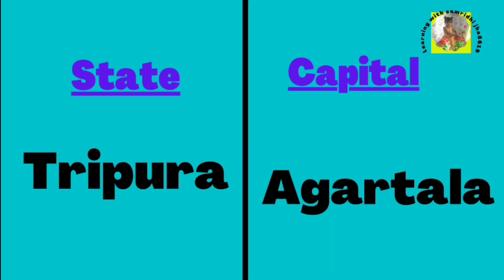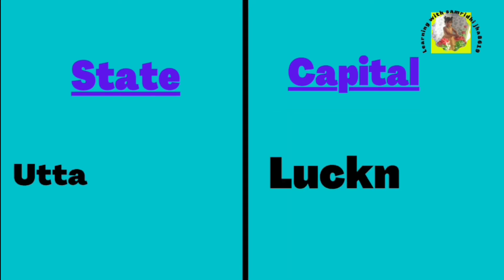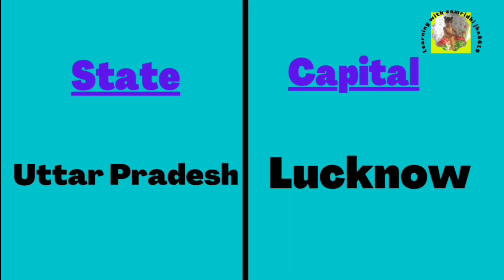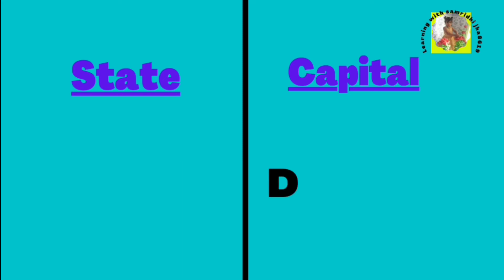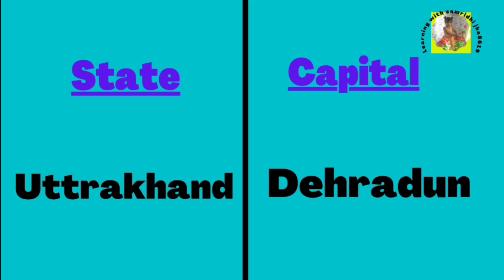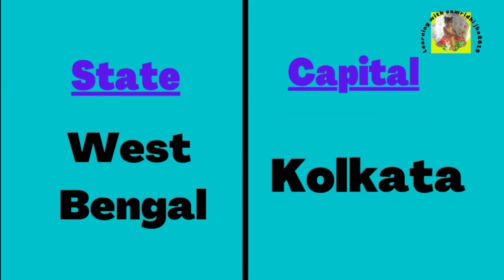Capital of Tripura is Agartala. Capital of Uttarakhand is Dehradun. Capital of West Bengal is Kolkata.